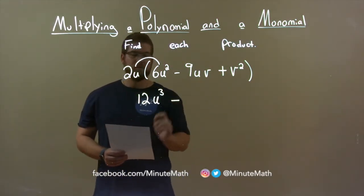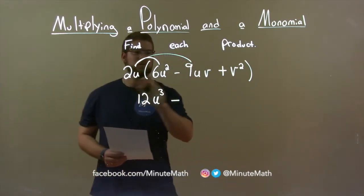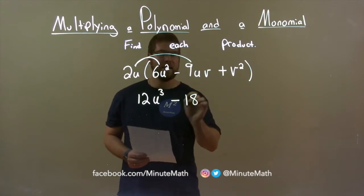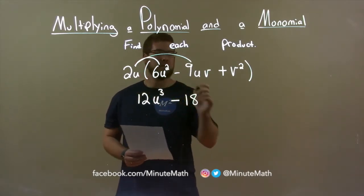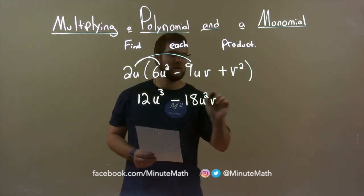Subtraction separates these two terms, and we do it again. 2u times 9uv. 2 times 9 is 18. u times u is u squared. There's no v here, so we just bring this v down.